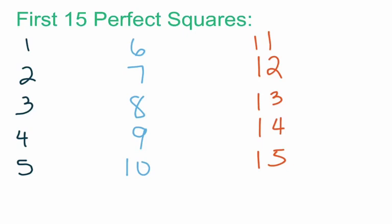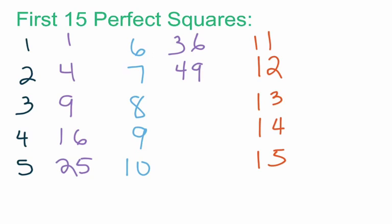If we take 1 times 1, that equals 1. 2 times 2 is going to equal 4. 3 times 3 equals 9. 4 times 4 is 16. 5 times 5 is 25. All I'm doing here is taking the number written at the start of the slide and multiplying it by itself to get the number I'm writing in purple. Continuing to the middle column: 6 times 6 is 36. 7 times 7 is 49. 8 squared, which is the same as 8 times 8, is 64. 9 squared is 81. 10 squared is 100.